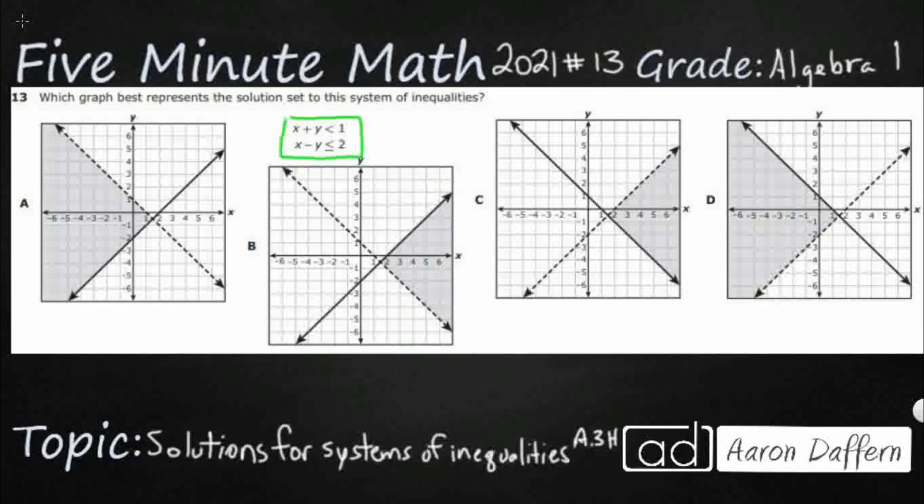Notice our solutions here. On A and B, this positive slope right here - it looks like the lines are all graphed in the same spot, but this positive slope is going to be a greater than or equal to, whereas this positive slope is going to be a less than or equal to because it's shading below the line.